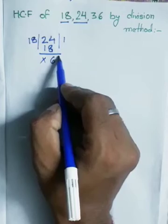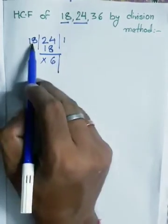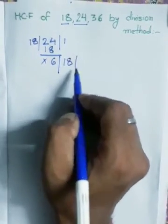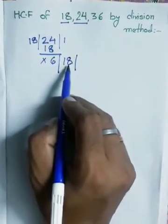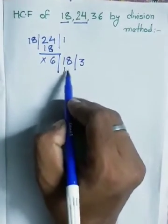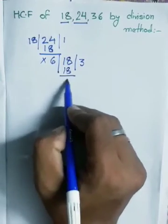Now again, write 18 here. This 18, write down here. Now divide again, divide 18 by 6. So 6 threes are 18. Now it becomes cancelled. We got 6.